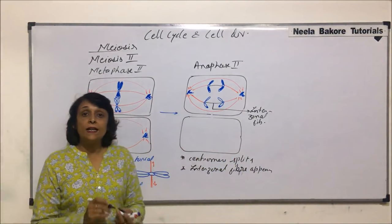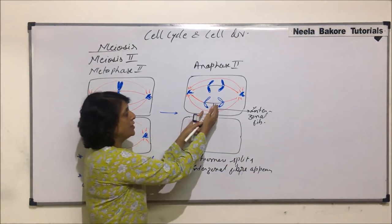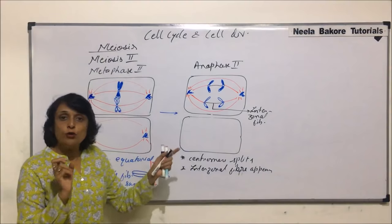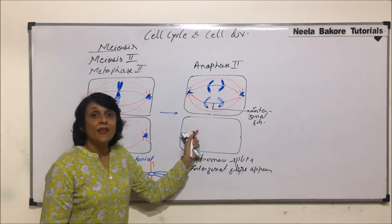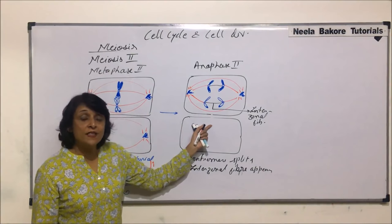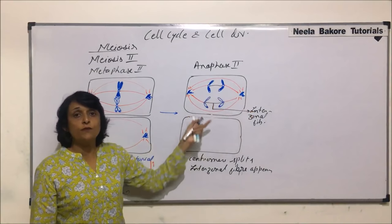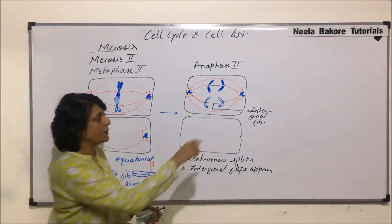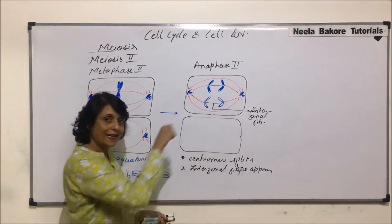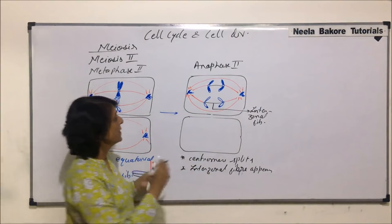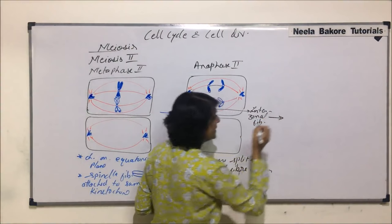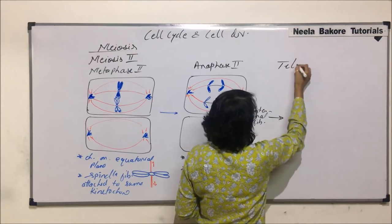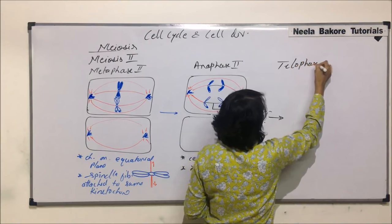In early anaphase, the chromosomes are here. By late anaphase, they will reach up to the poles or closer to the poles. By the end of anaphase itself or by the beginning of telophase 2, cytokinesis would also start. But we would show that in telophase 2. Both these cells enter telophase 2. So now the stage is telophase 2.